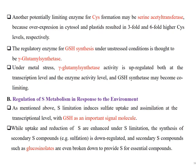Another potentially limiting enzyme for cysteine formation may be serine acetyltransferase, because overexpression in the cytosol and plastid resulted in 3-fold and 6-fold higher cysteine levels respectively. The regulatory enzyme of GSH synthesis under unstressed conditions is thought to be gamma-glutamylcysteine synthetase. Under metal stress, glutamylcysteine synthetase activity is upregulated at both the transcriptional level and the enzyme activity level, and GSH synthetase may become co-limiting.